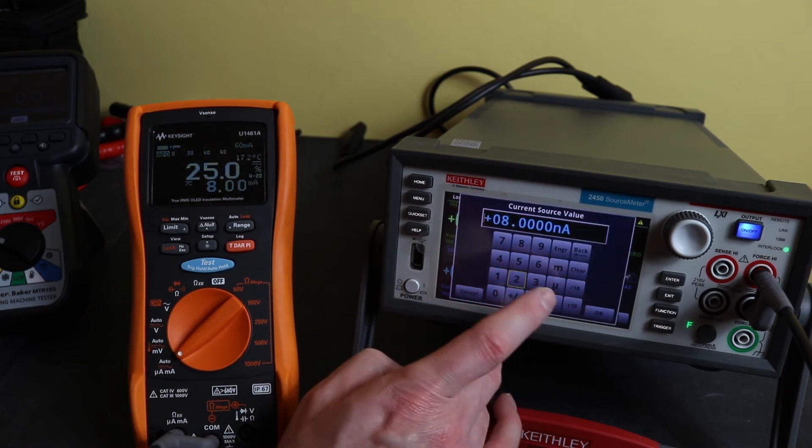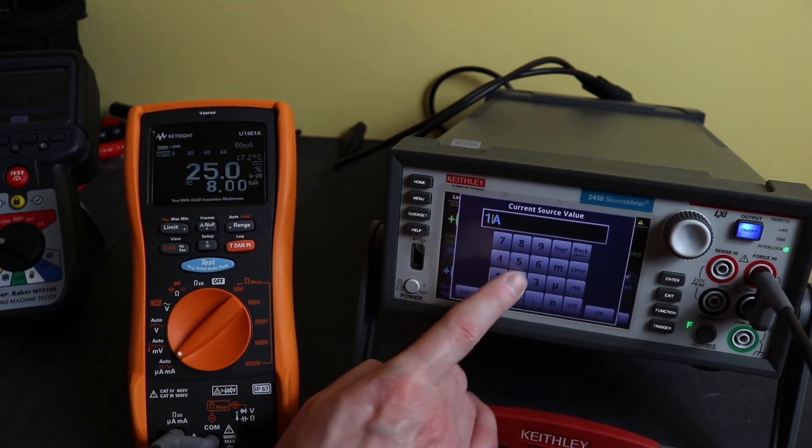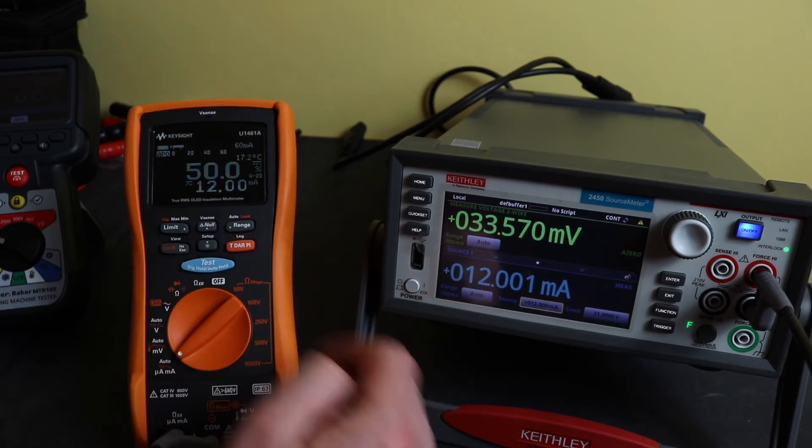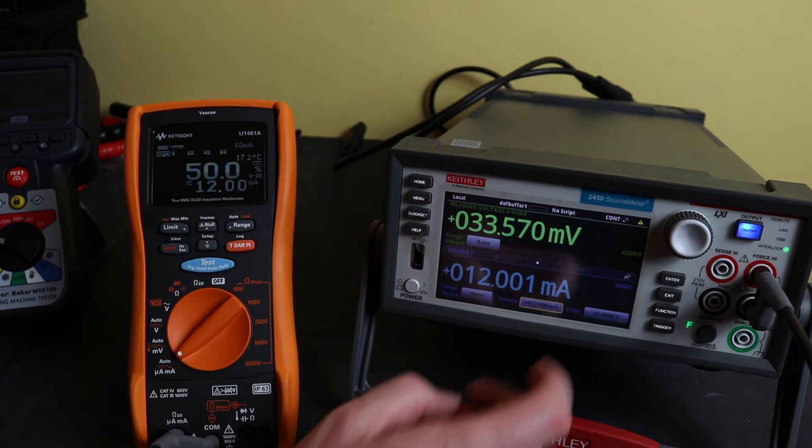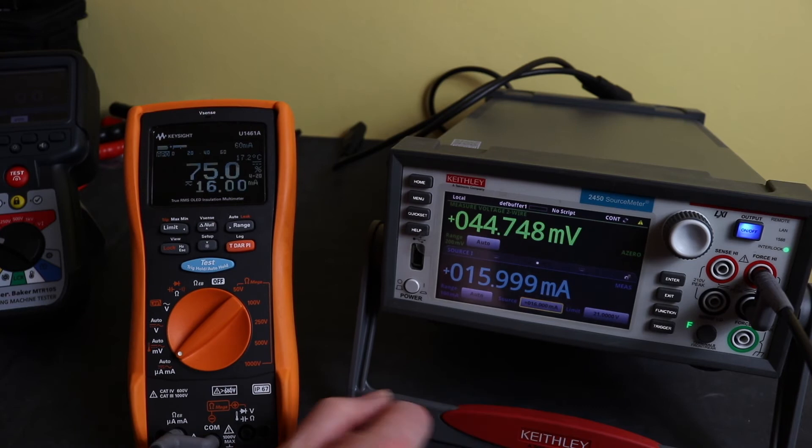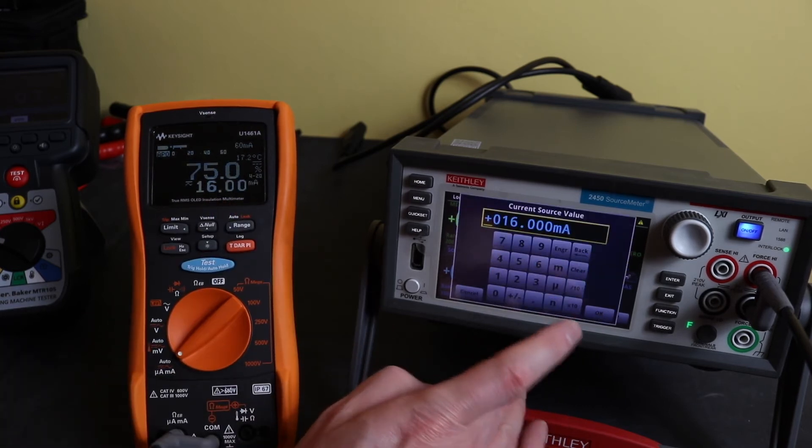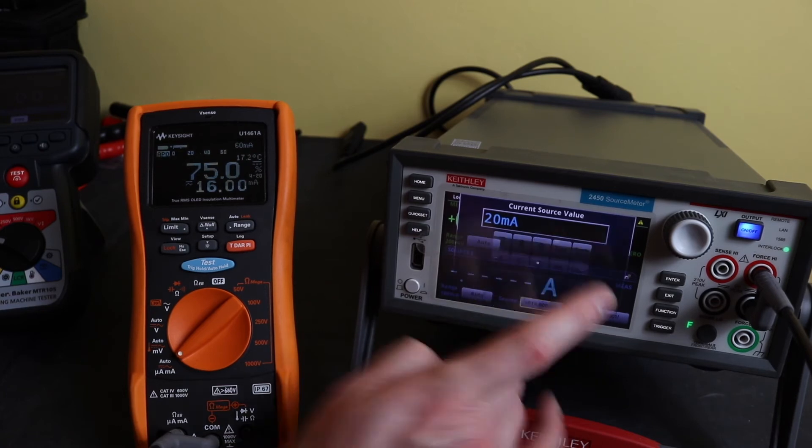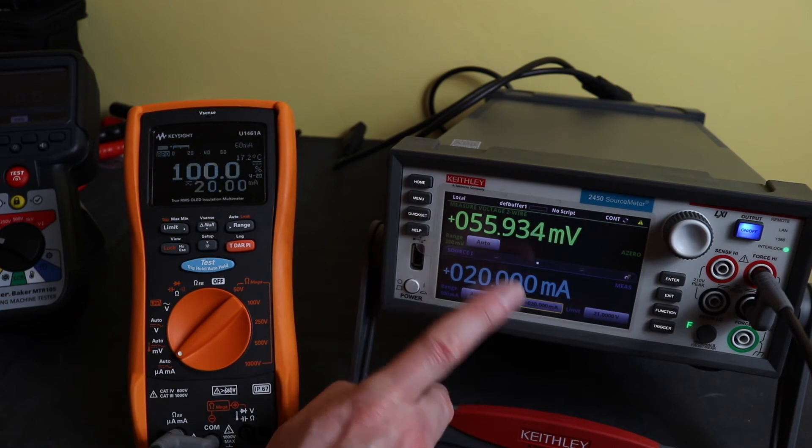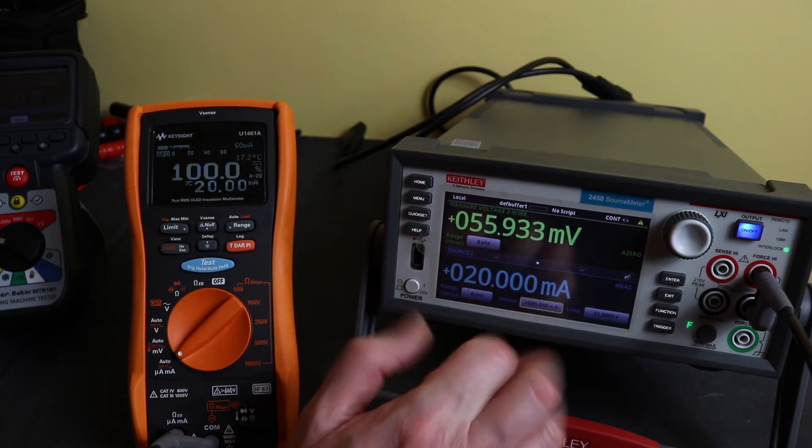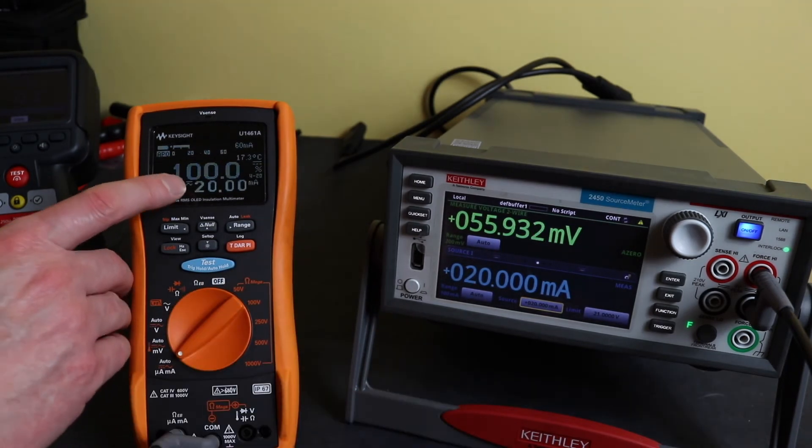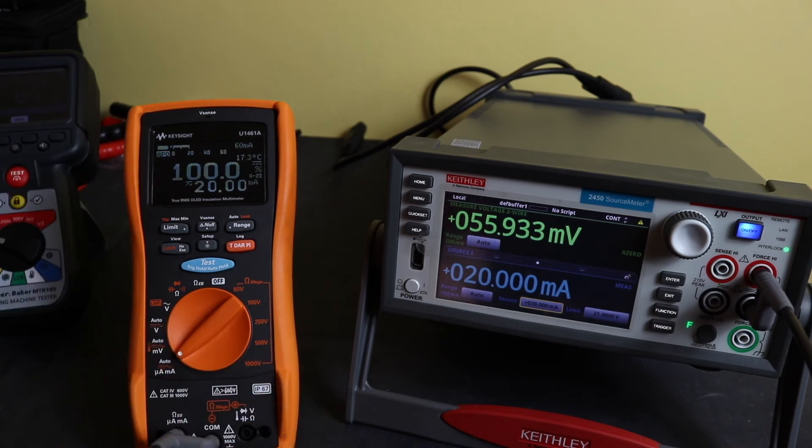Let's go up another four milliamps, 12.001 on 12 there and dead on 50 percent, 16 milliamps 75 percent 16.00 and finally 20 milliamps full range is 20.00 dead on there, 55.93 millivolts there, it's a very low burden and you see on the Keysight here superb accuracy 20.00 milliamps and smack on 100 percent.